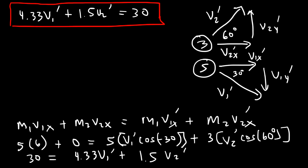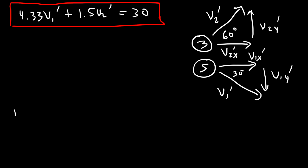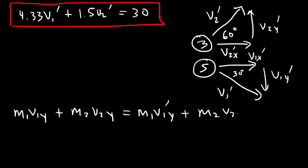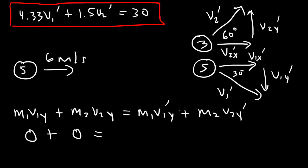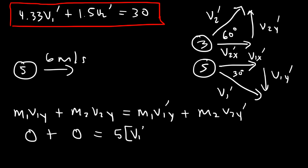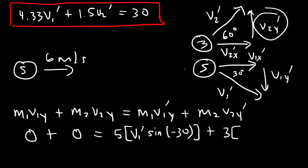Now let's focus on momentum in the y-direction: m1·v1y + m2·v2y = m1·v1y' + m2·v2y'. The five kilogram ball was moving in the x-direction only, so there is no y-component. The second ball was at rest, so it had no momentum. The right side equals 5 times v1' times sine of negative 30 degrees, plus 3 times v2' times sine of 60 degrees.